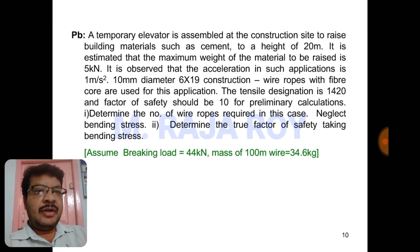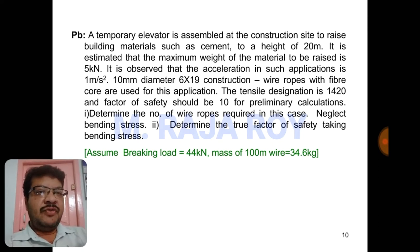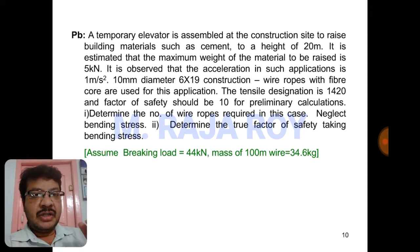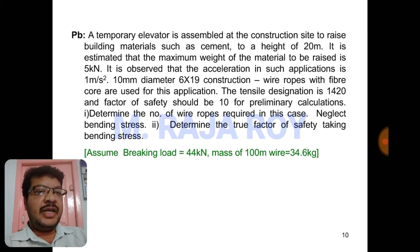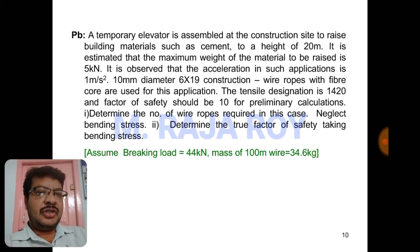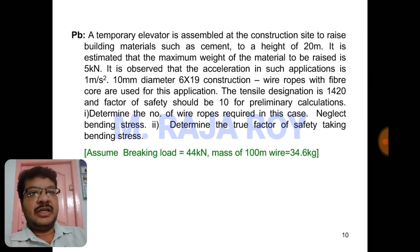10 mm diameter, 16 by 19 construction wire rope with fiber core is used for this application. The diameter and type of construction are given; from these details we can get information like braking load and mass of 100 meter length wire from the data book. Since data books are not allowed, the data is also given: braking load is 44 kN, mass of 100 meter wire is 34.6 kg.